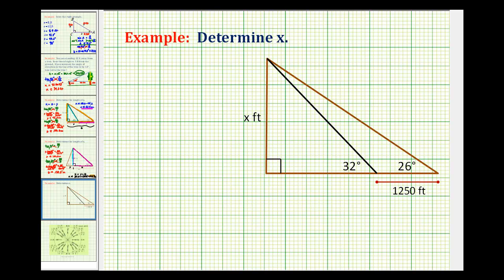In this example, we want to determine the length of this side labeled x from the given information. This angle is 32 degrees, this angle is 26 degrees, and the length of this segment is 1,250 feet.